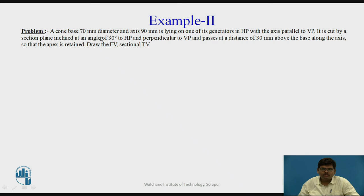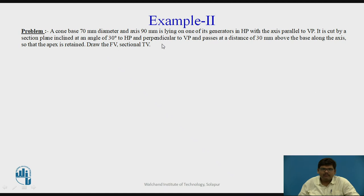We have a cone of 70 mm diameter and axis 90 mm. The base circle is 70 mm and the axis — the line joining the center of the base to the apex — is 90 mm. The cone does not have specified edges or corners; it has generators, which are imaginary lines joining the base and the apex. The cone is resting on HP on a generator such that the axis is parallel to VP, meaning you can see the true length of the axis — the true height of the cone. The cone is cut by a section plane inclined at 30 degrees to HP and perpendicular to VP.